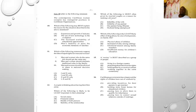Number fifteen: a society is best described as a group of people A) living in a foreign country, B) protesting about their human rights, C) held together by a common culture, D) working together in the same community. A society is C) held together by a common culture.